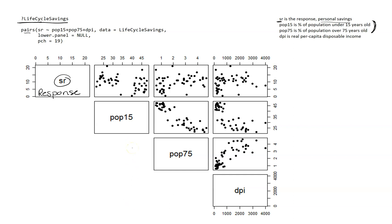Now that I have this scatterplot matrix, I'm just explaining what you get — it's just a bunch of individual scatterplots. I can blow each one of these plots up by using SR as the response variable and then using either POP15, POP75, or DPI as the explanatory variable. Sometimes that's a lot of graphs to stare at. If I just need a quick overview, I'm really just thinking about how those points look — not really concerned about the scales.